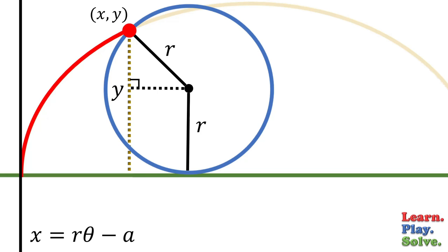For y, we can break it into two smaller segments, one of which we know is equal to the radius. And the other one, let's call it b for now. So y is equal to b plus r, or r plus b.